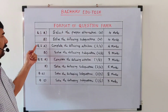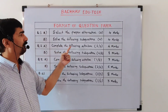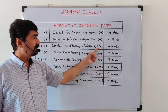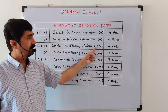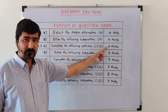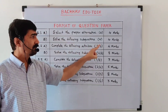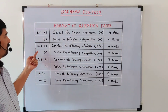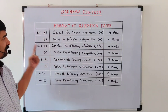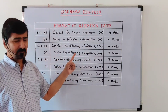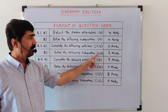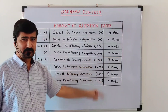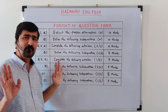Question 2A is 'Complete the following activities.' They will provide 3 activities, out of which we have to solve 2 activities, and they are for 4 marks — so 1 activity carries 2 marks. Question 2B is 'Solve the following sub-questions.' They will provide 5 sub-questions, out of which we solve 4, carrying 8 marks — each sub-question is for 2 marks.